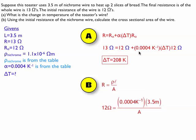Then I'll put my numbers in, 12 ohms equal to temperature coefficient times 3.5 divided by the area. Solve it for the area, and I get 3.9 times 10 to the negative 6 meters squared.